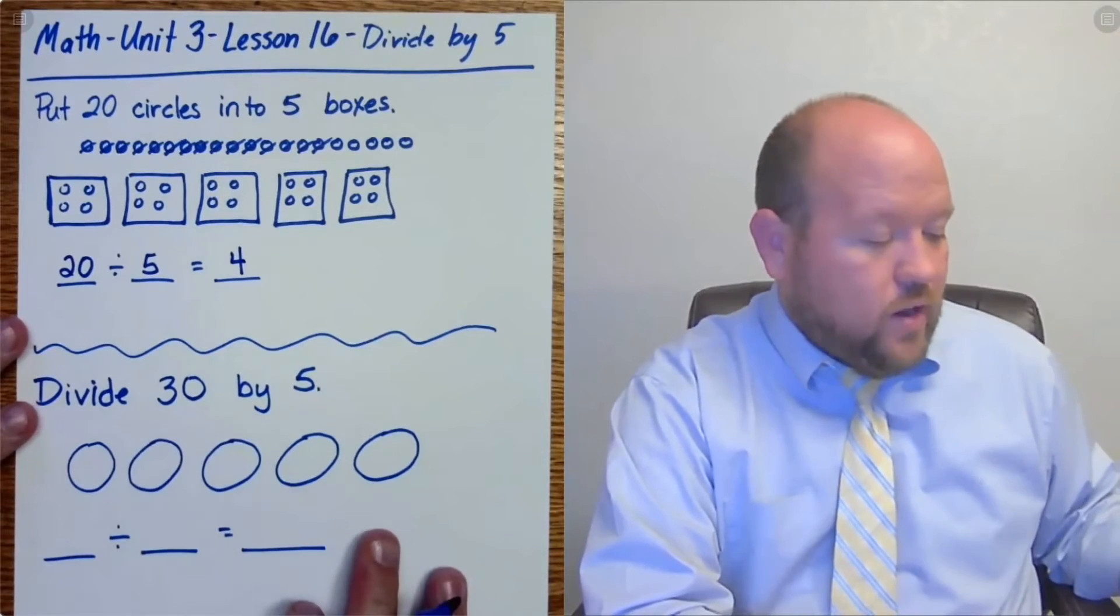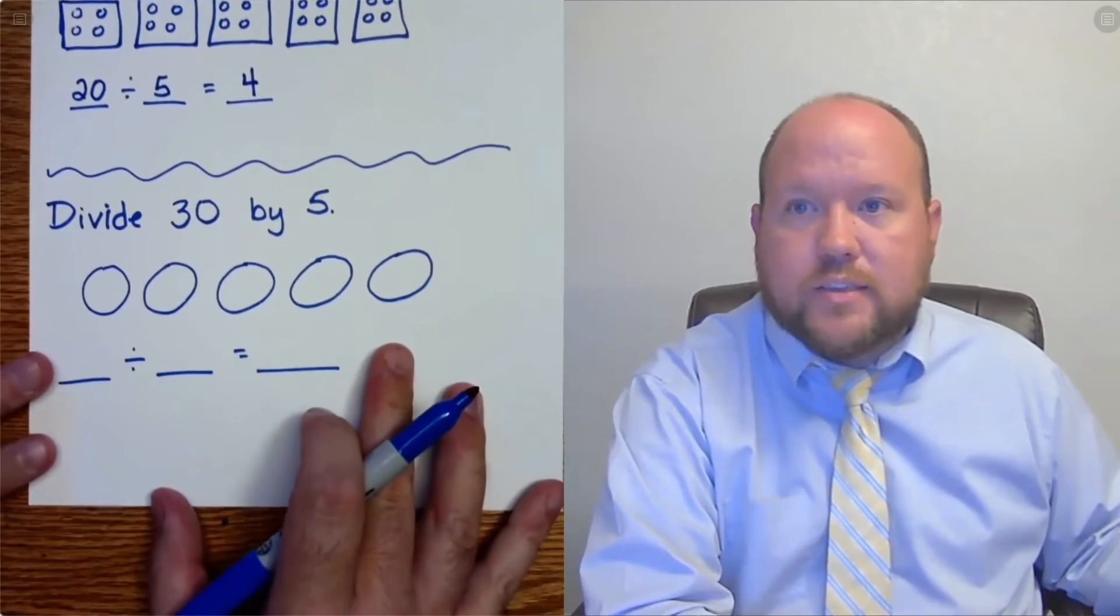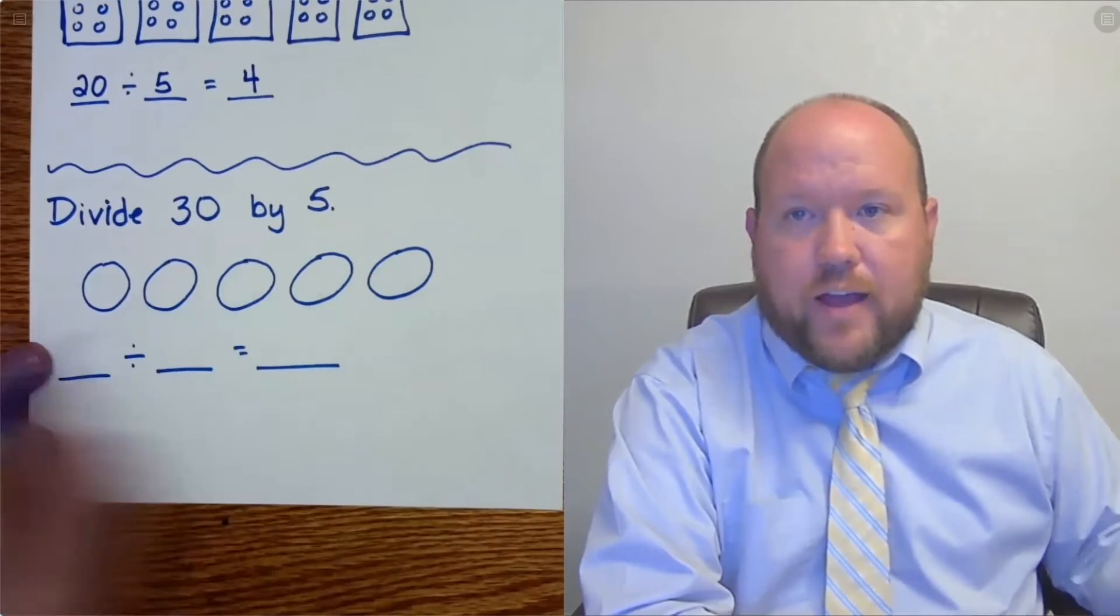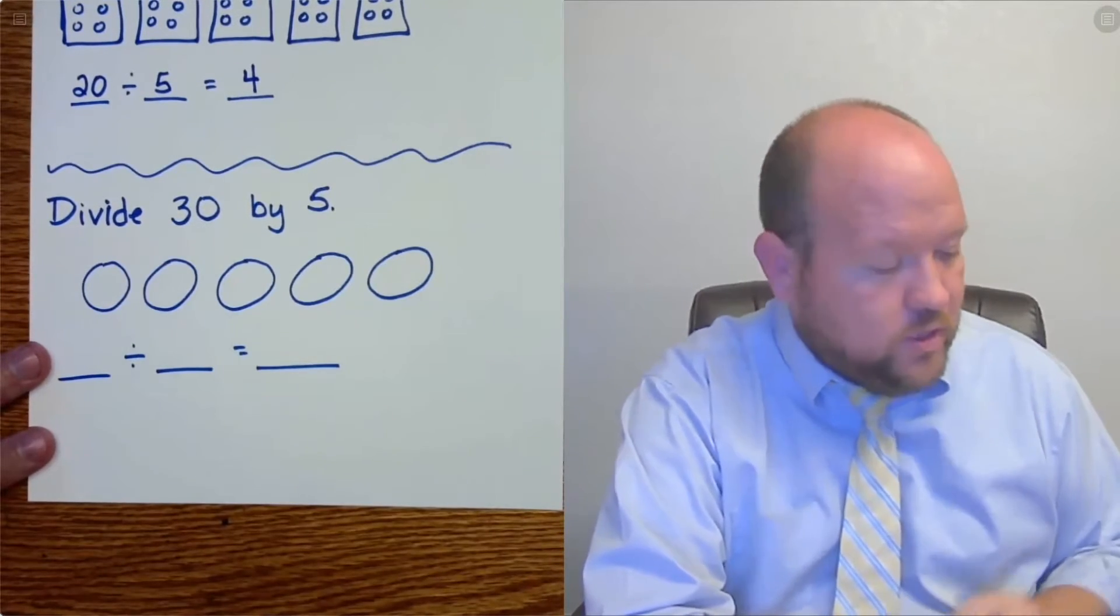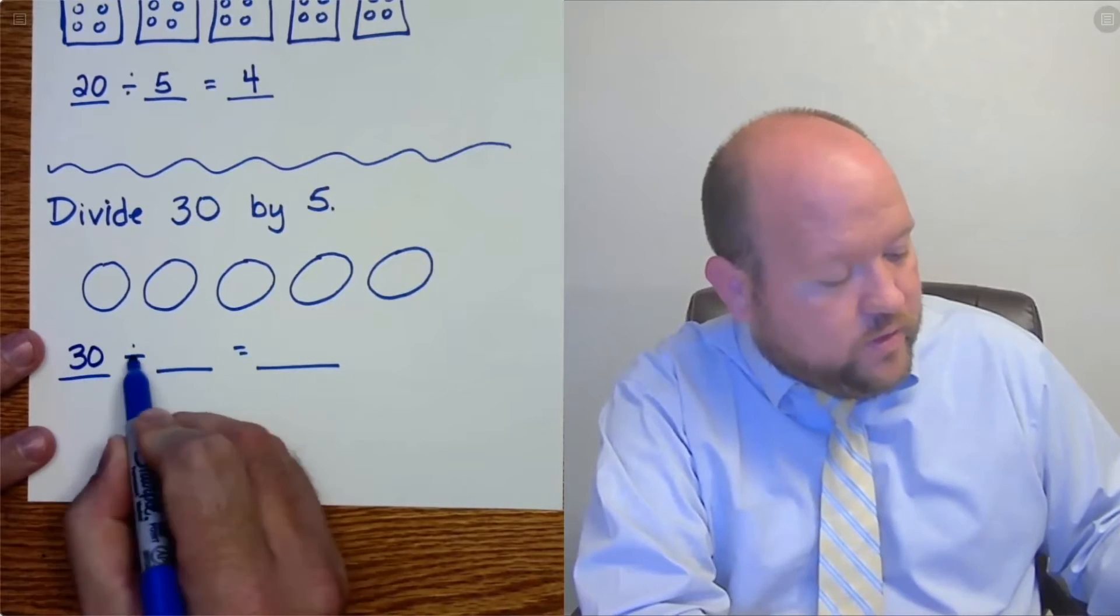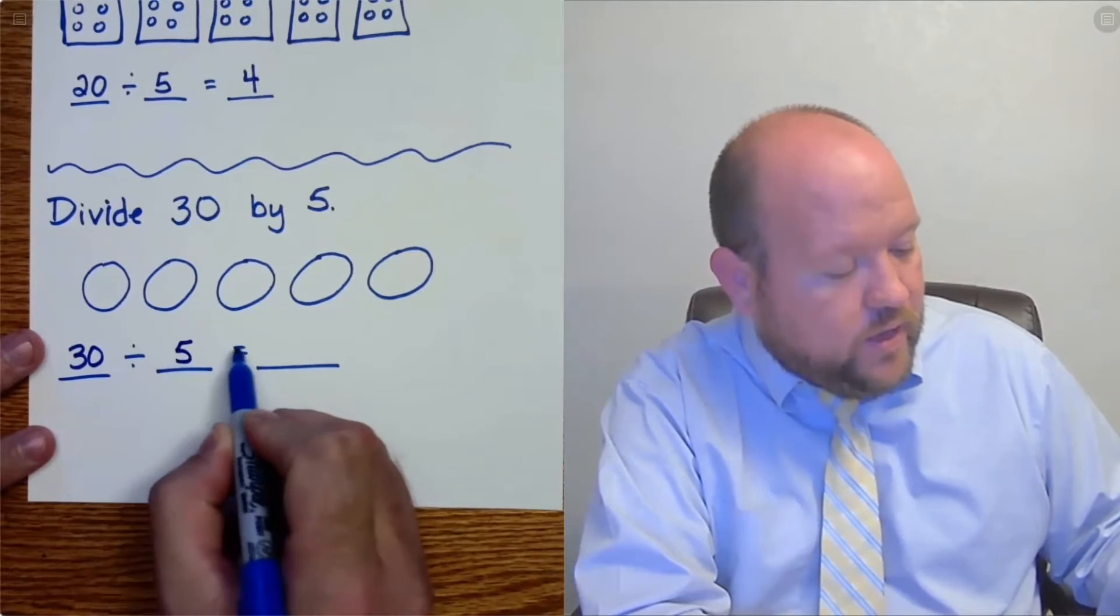Now down here it says divide 30 by 5. So how would we write that as an equation? We would do 30 divided by 5 equals.